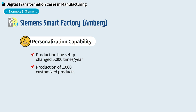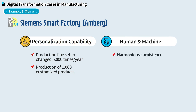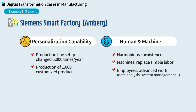The last feature of Siemens is the harmonious coexistence between human and machine. Machines replace simple labor while employees perform advanced work like data analysis or systems management to improve productivity. This way, they could resolve the worry about unemployment which may be caused by digital transformation.